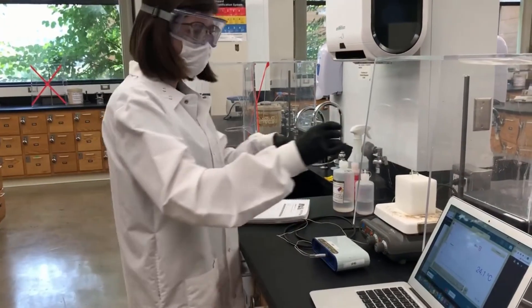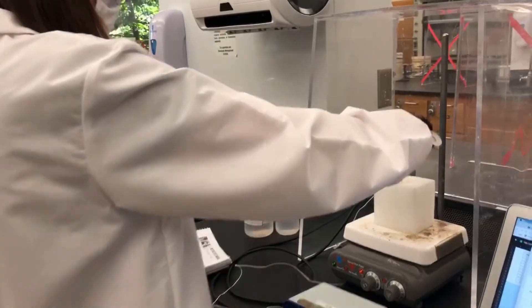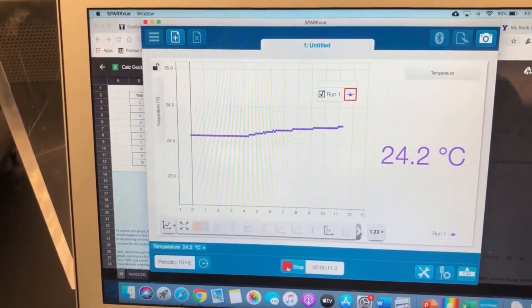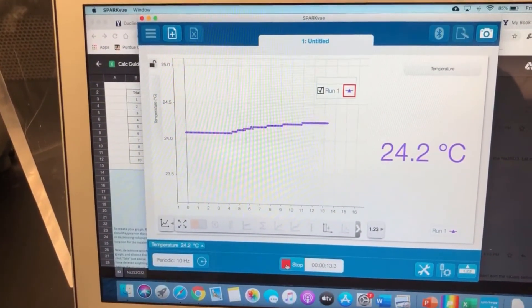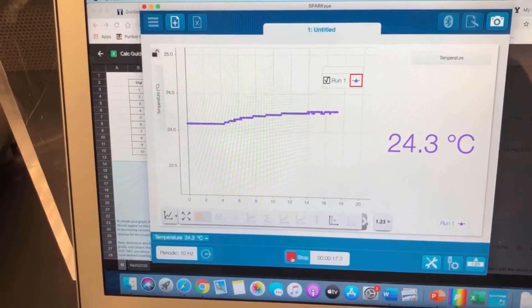I already have the bleach in here and I'm just going to add in my unknown so you can see the temperature is starting to rise. And then we'll just keep track of what the highest temperature it gets to is so that we can subtract it from the initial temperature.